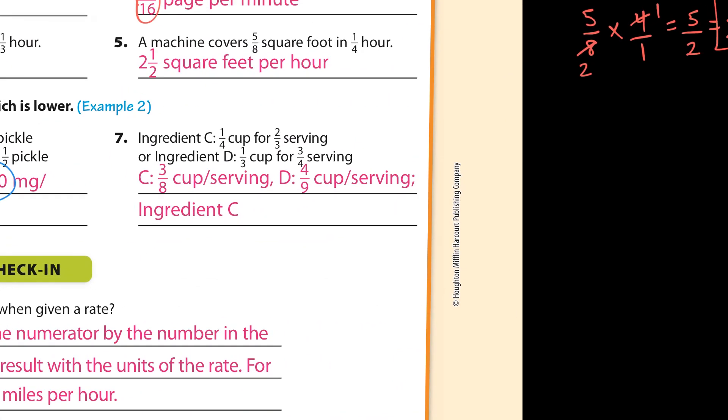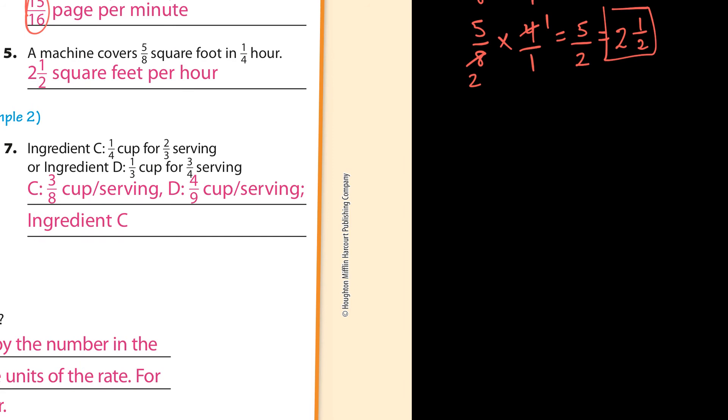Number 7. Ingredient C, you have 1 fourth divided by 2 thirds for that unit rate, which is 1 fourth times 3 halves. And that's going to be 3 over 8. 3 eighths. And then for D, that is 1 third divided by 3 fourths, which is 1 third times 4 thirds, which is 4 ninths. And that's what's given right there.